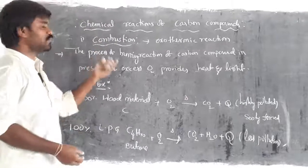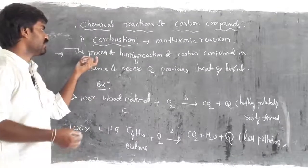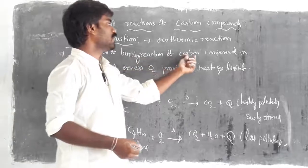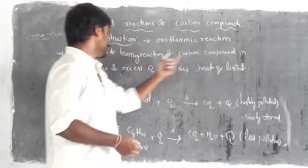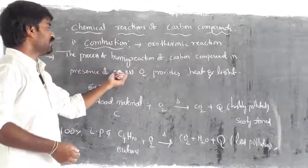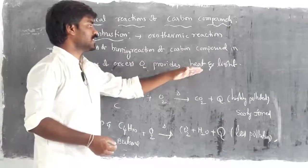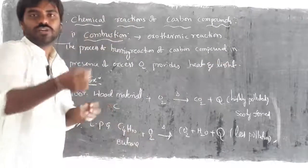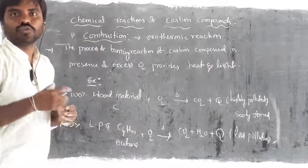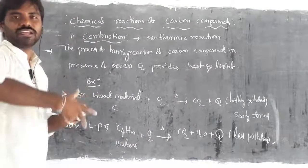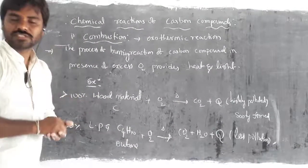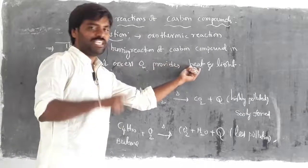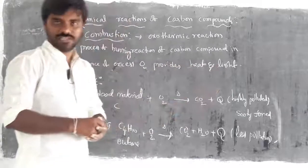What is combustion? It is having a small definition: the process of burning reaction of carbon compounds in presence of excess O2 provides heat and light. So first we have to raise a little bit of fire to burn the material. Ultimately it catches fire in presence of oxygen, and we want to provide a high amount of heat as well as light.